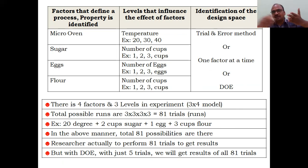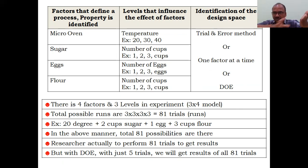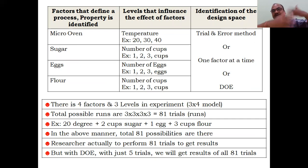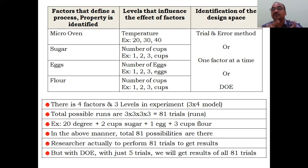If you want to list all 81 combinations by hand, it may take half an hour to one hour just to write them down. Conducting all 81 experiments requires nearly one week or ten days to maintain consistent protocol. Doing one experiment per day means 81 days. But with Design of Experiments, you can complete this within a single day.